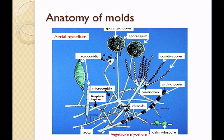Observing the differences in macroconidia and microconidia can help to identify the fungus. There are several different types of spores. Arthrospores — arthro means joint — are septate hyphae that break up into the reproductive spores. Chlamydospores are actually born within the hyphae and cause the hyphae to swell.